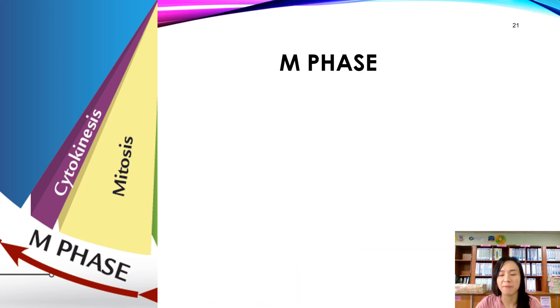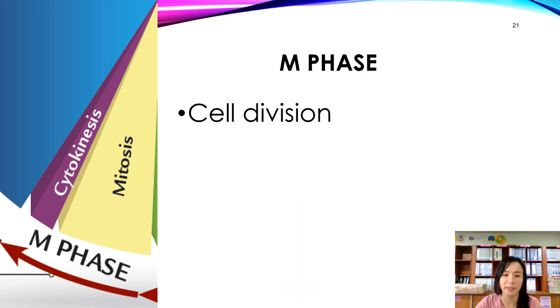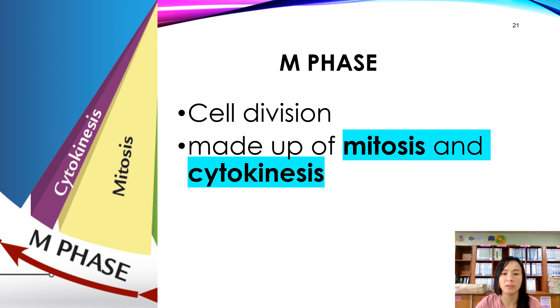During M-phase, cell division occurs and it consists of mitosis and cytokinesis.